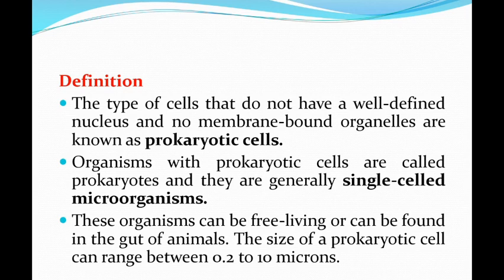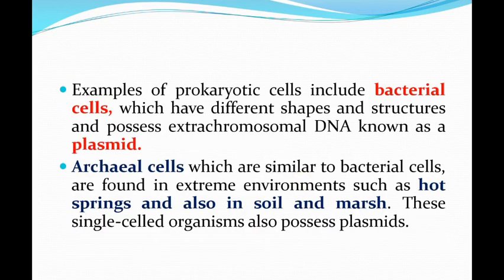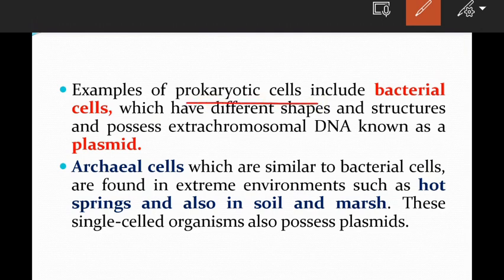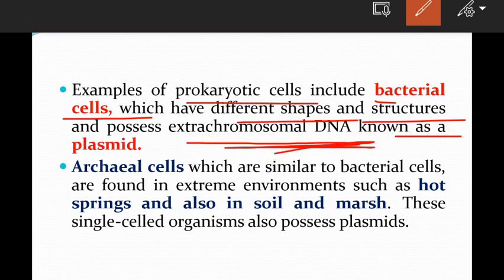These organisms can be free-living or can be found in the gut of animals. The size of prokaryotic cells can range between 0.2 to 10 microns. Examples of prokaryotic cells include bacterial cells, which have different shapes and structures and possess extra-chromosomal DNA known as plasmid — very important.